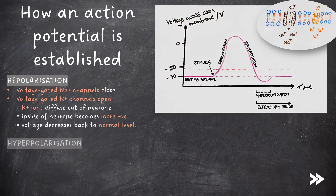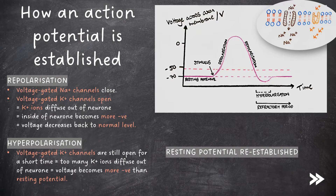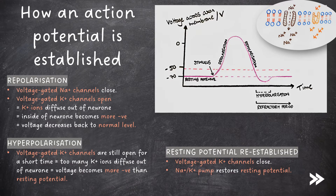Then we have hyperpolarisation. Voltage-gated potassium ion channels are still open for a short time, meaning that too many potassium ions diffuse out of the neuron and the voltage becomes even more negative than the resting potential. Finally, the resting potential is re-established. Voltage-gated potassium ion channels are closed, and the sodium-potassium pump restores the resting potential.